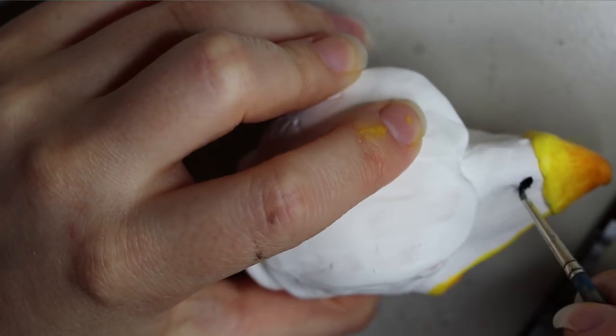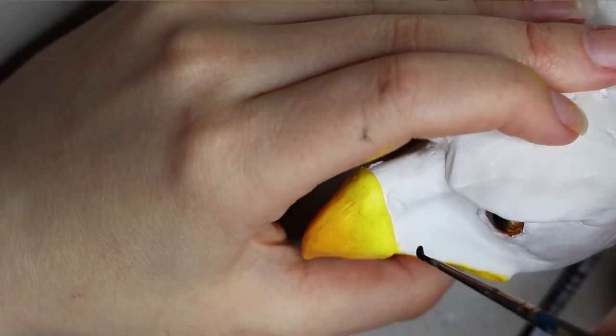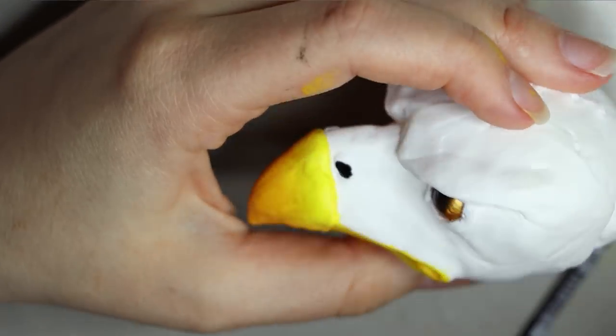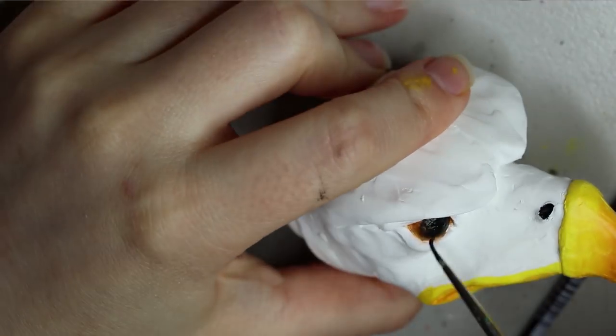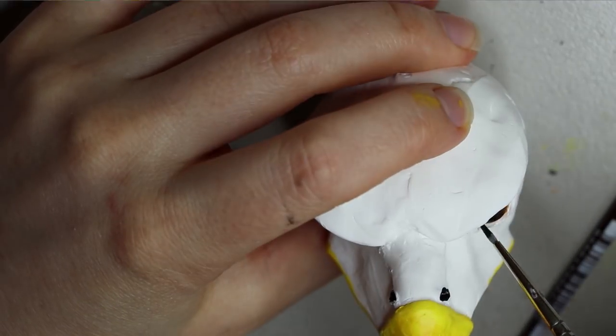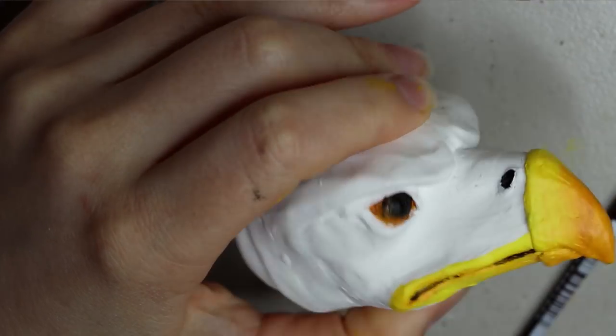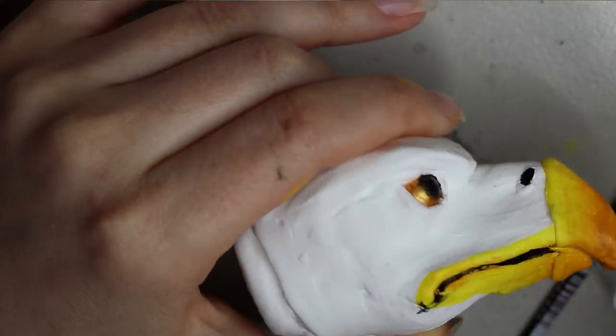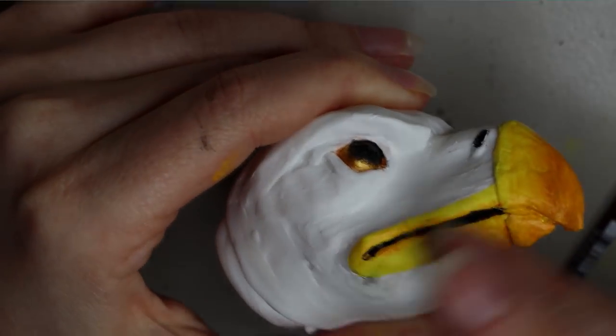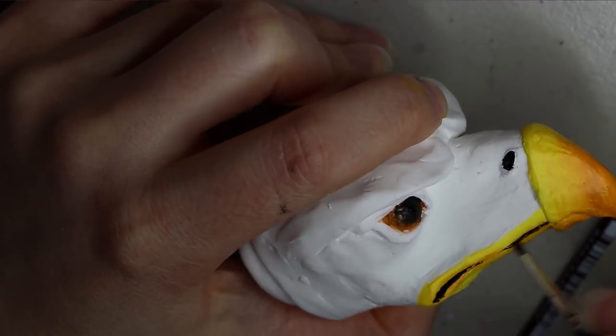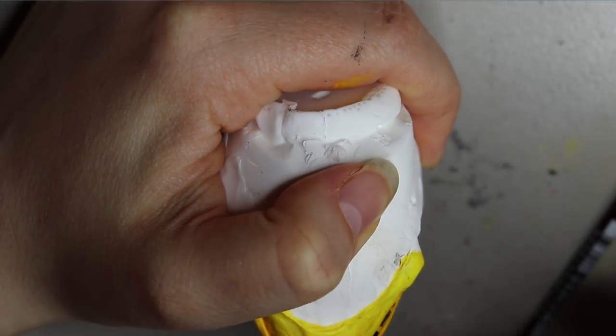Also filling in the little nostril area in the same black. Most of the head is going to stay white so you just have to be a little bit careful where you put the black paint because it's difficult to get off once it's on there. You can paint over it but sometimes it comes through the paint, so it's just better to be a bit more careful.